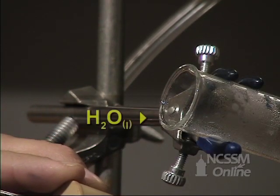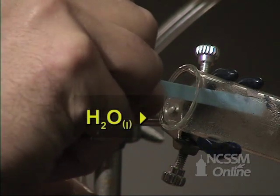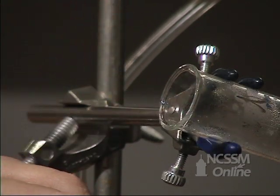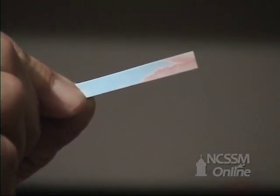The water vapor that's produced will condense at the top of the test tube, and we will test for the presence of the water using some cobalt blue paper.